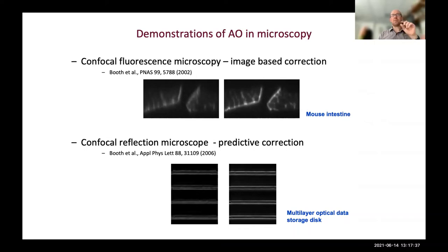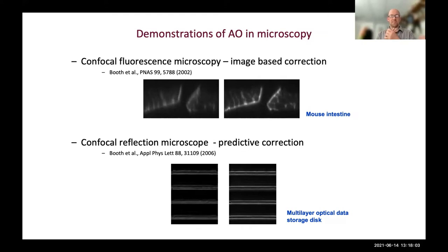In those confocal images you can clearly see increased contrast and resolution. The optical axis goes top to bottom, and the biggest effect is along that direction because the primary effect of aberrations is to elongate the focal spot rather than broaden it. We also did early work on aberration correction for multi-layer optical data storage - CD players are effectively confocal microscopes. This was then applied to two-photon fluorescence microscopy for looking at mouse embryos, where even at around 100 micrometers depth the aberration-corrected version is much brighter and clearer.